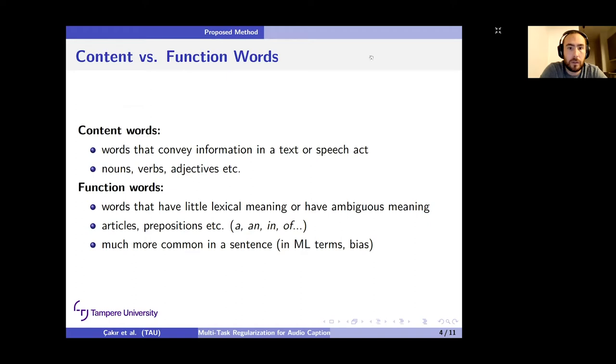Coming to content words and function words. In linguistics, content words are defined as the words that convey information in a text or speech act. These words are nouns, verbs, adjectives, etc., the words that bring in the information. Whereas the function words would be words that have little lexical meaning or have ambiguous meaning. Such examples are articles, prepositions, etc., basically tying up the content words into a sentence in a grammatical sense. Obviously they will be much more commonly found in a sentence compared to many of the content words because they're supposed to be there regardless of what kind of information the sentences convey.